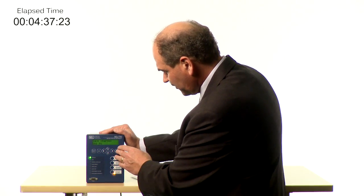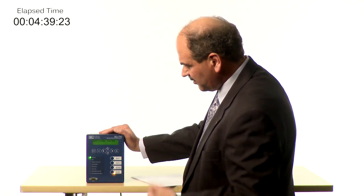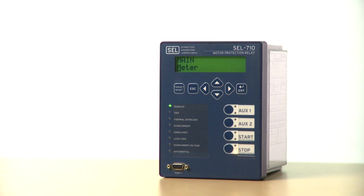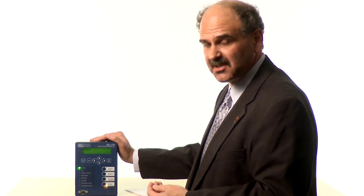Okay, then it's going to ask if I want to save all of those changes, and I do want to save those. And the relay will blink, it'll save the settings, and that's it, we're ready to go. That's all you need to do to program the SEL 710 motor protection relay to be up and running and protecting your motor on your system.